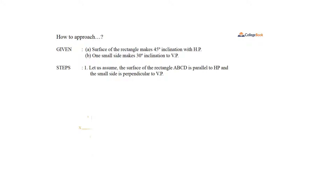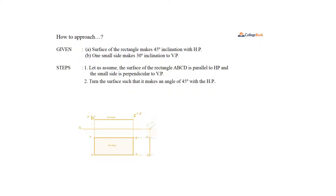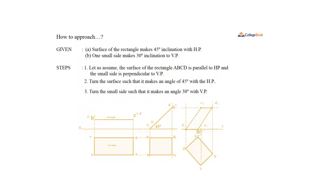Steps: Step 1 — assume the surface of the rectangle ABCD is parallel to the horizontal plane and the small side is perpendicular to the vertical plane. Step 2 — turn the surface such that it makes an angle of 45 degrees with the horizontal plane. Step 3 — turn the small side such that it makes an angle of 30 degrees with the vertical plane.